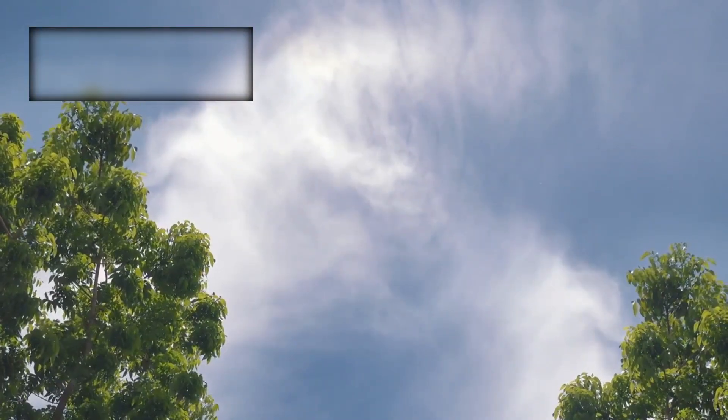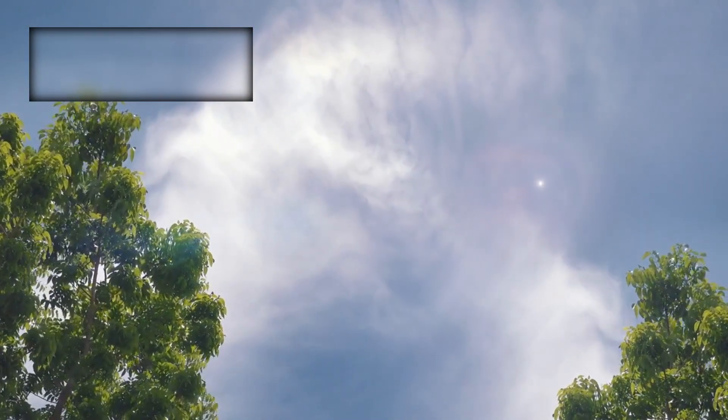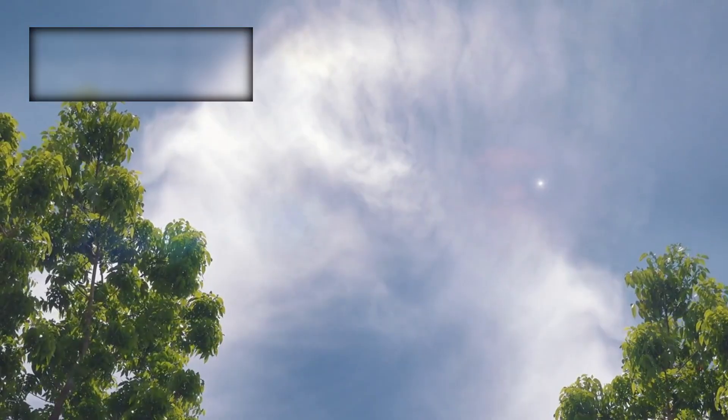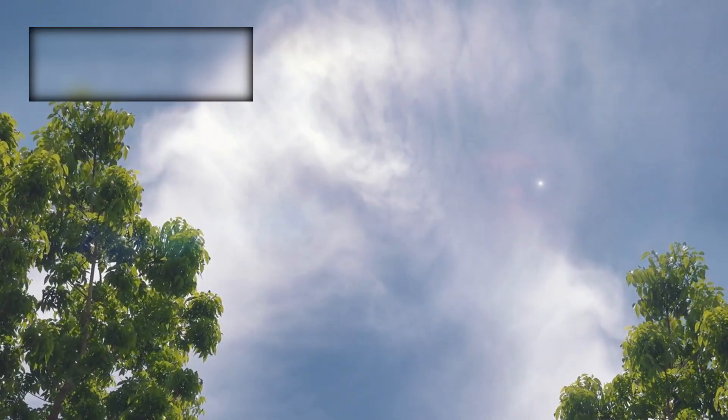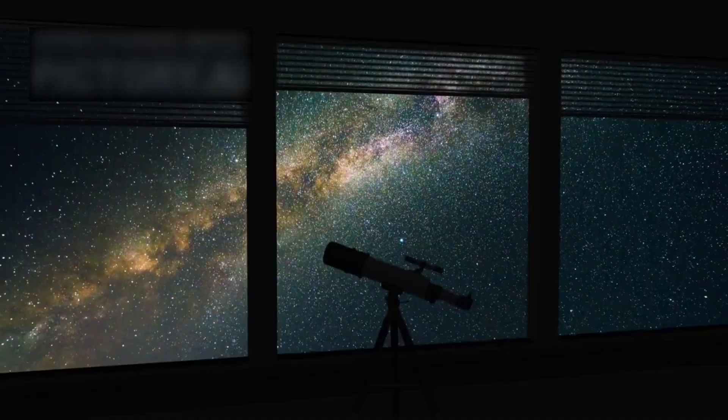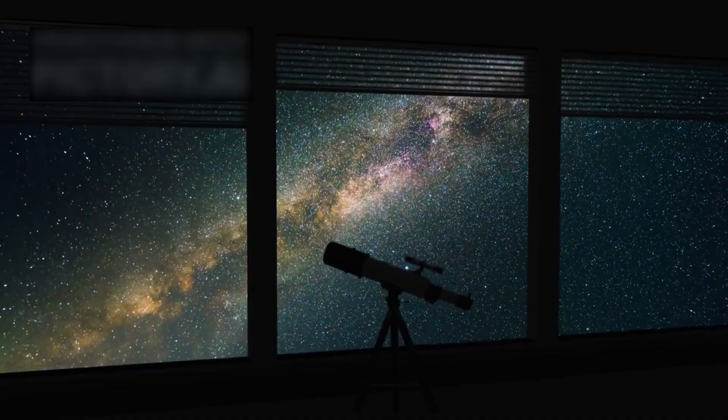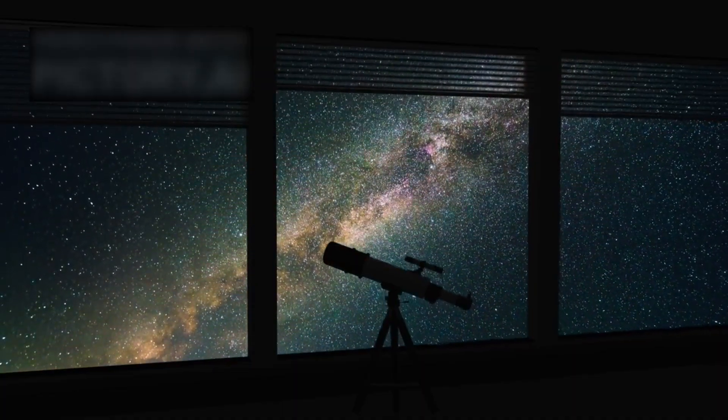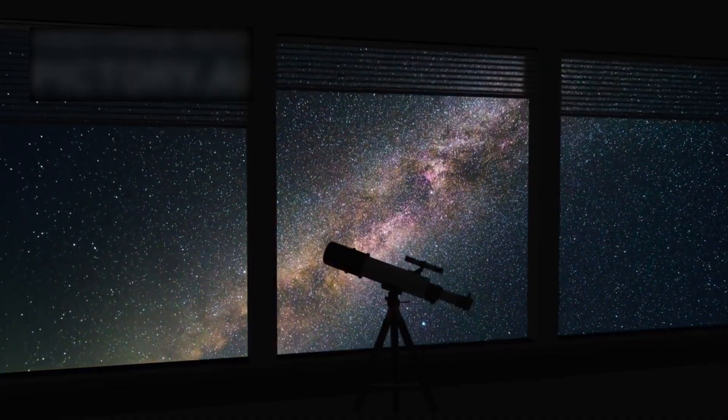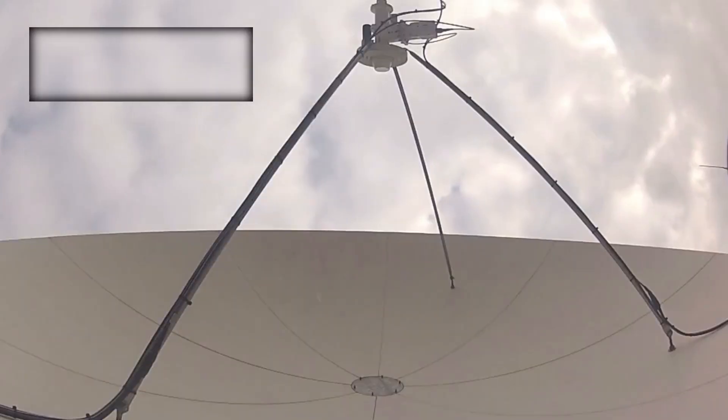Now think about this: the light from Betelgeuse, a red supergiant star roughly 640 light years away, began its journey toward us centuries ago. When we look at it tonight, we are seeing light that set out long before the dawn of modern civilization, before the telescope was even invented.